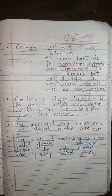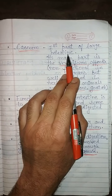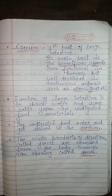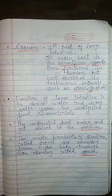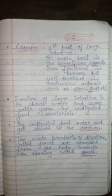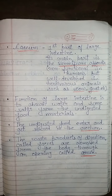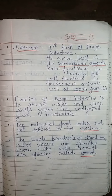Moving to the first part, that is cecum. It is the first part of the large intestine. Iska jo main part hai, woh hai aapka vermiform appendix, jo ki humara humans mein non-functional hai. But bahut zyada develop hota hai yeh various animals mein — aise animals jo grass vagera eat karti hain, jaise cow, goat. Simple baat hai: cecum aapki large intestine ka pehla part hai, iska main part hai vermiform appendix. Hum logon mein iska koi role nahi hai, yeh vestigial hai.